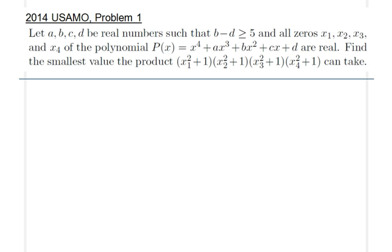Hello everyone, in this lecture we will be studying 2014 USAMO problem number 1. Here's a view of this problem. a, b, c, d are real numbers such that b minus d is greater than or equal to 5. It's also given that x₁, x₂, x₃, and x₄ are the roots of the following 4th degree polynomial, where a, b, c, and d are the coefficients and the roots are all real.